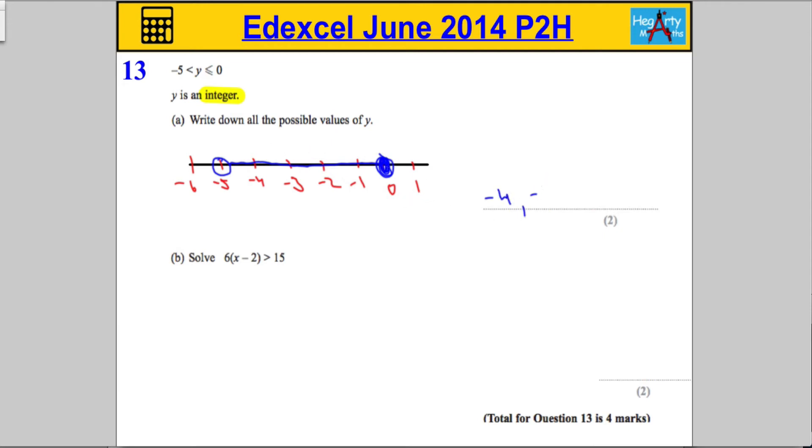Negative 4, negative 3, negative 2, negative 1, and 0.